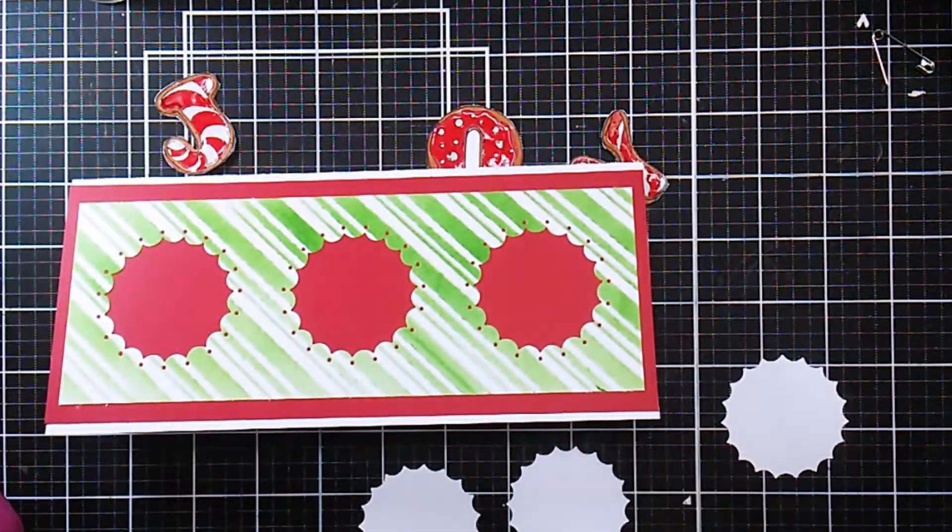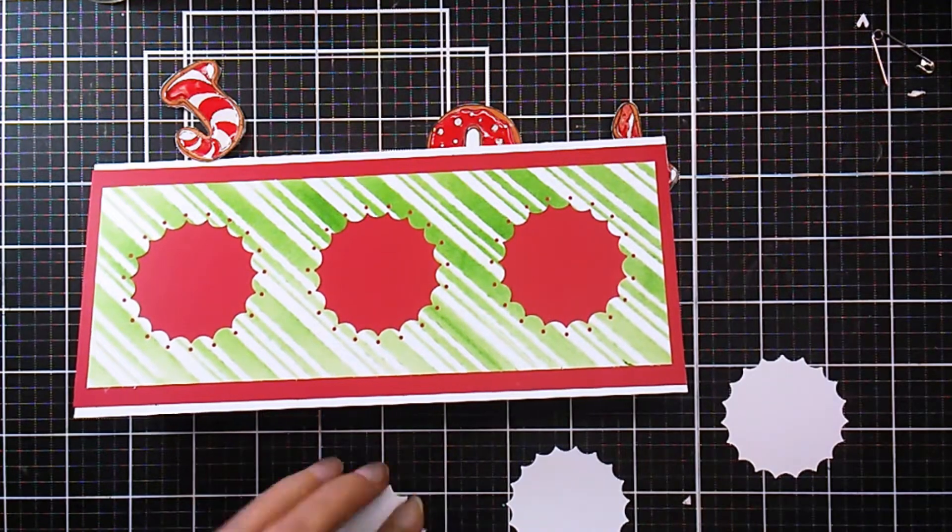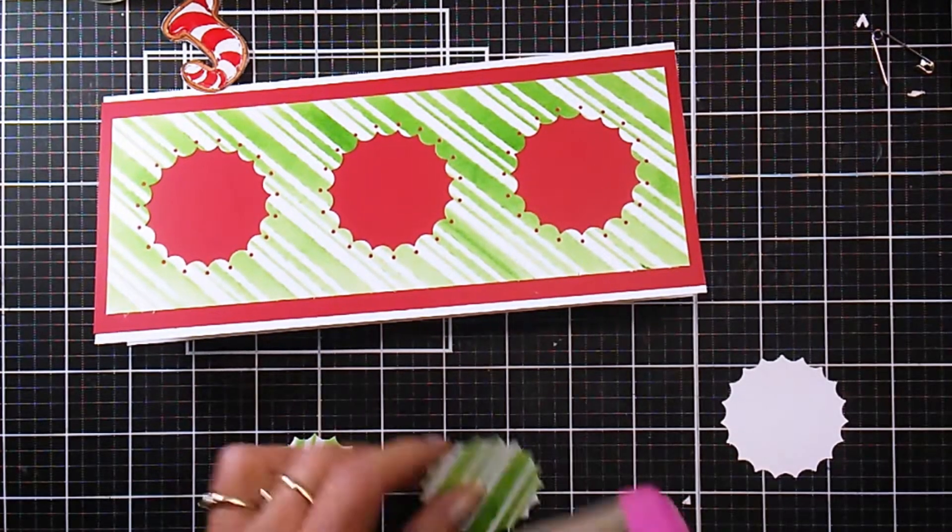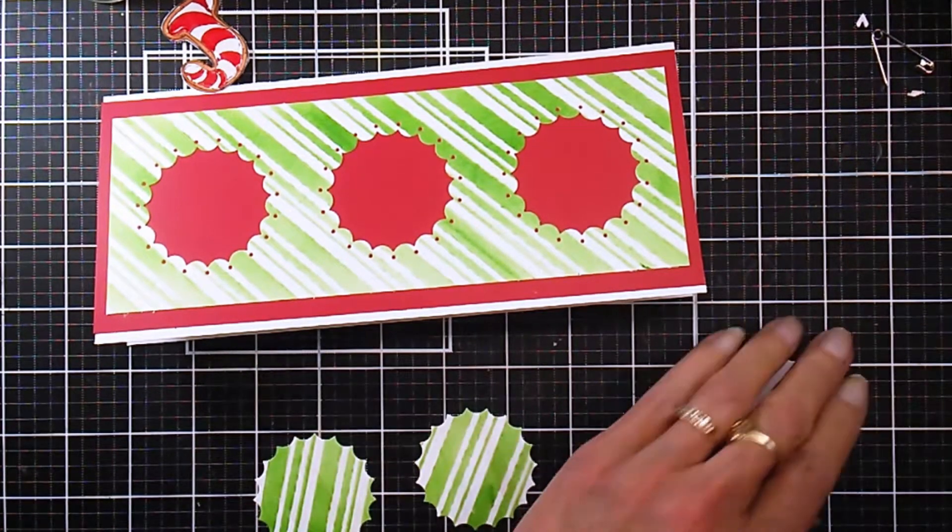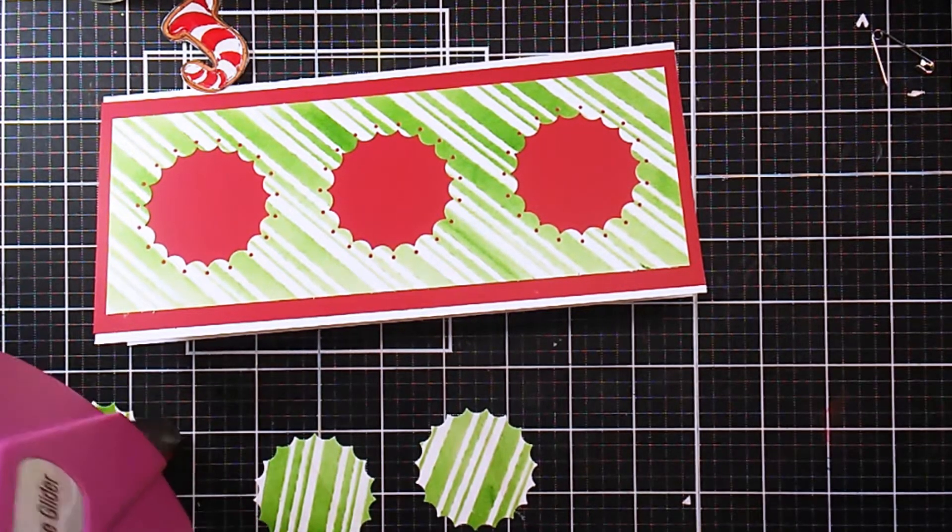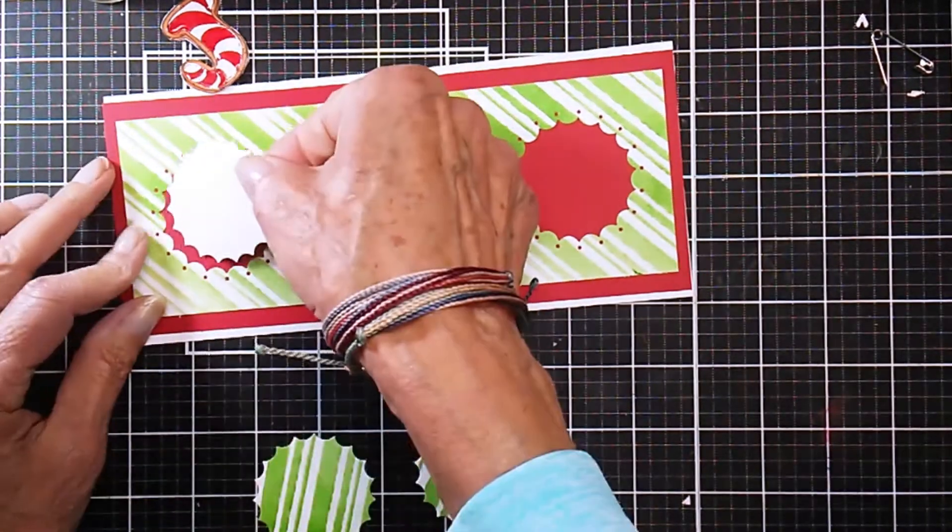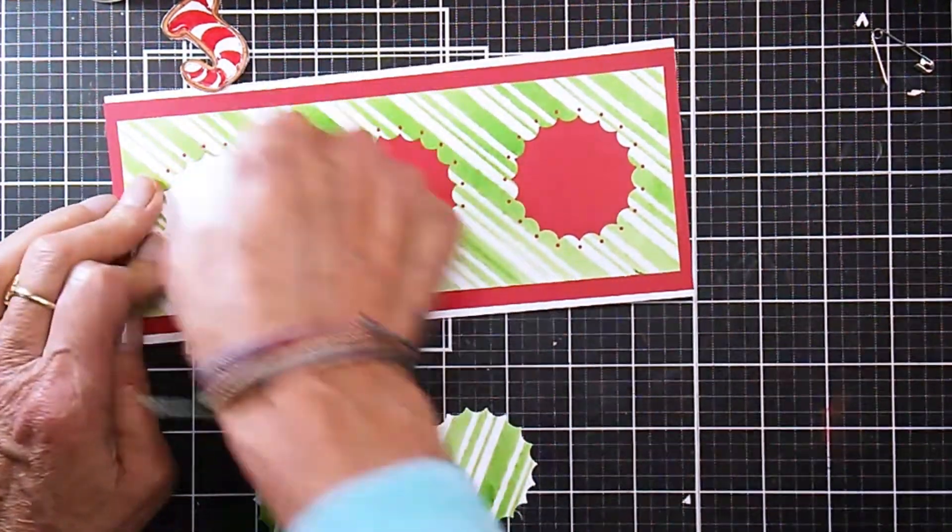The next thing I'm going to do is attach those white leftover pieces that were cut out from that green stripe. You can see that green stripe there on the background. I'm just adding my tape runner here and I'll just fit those right in like a puzzle.